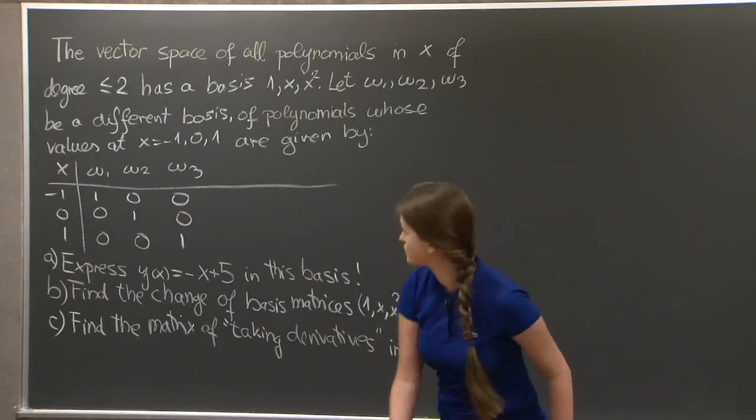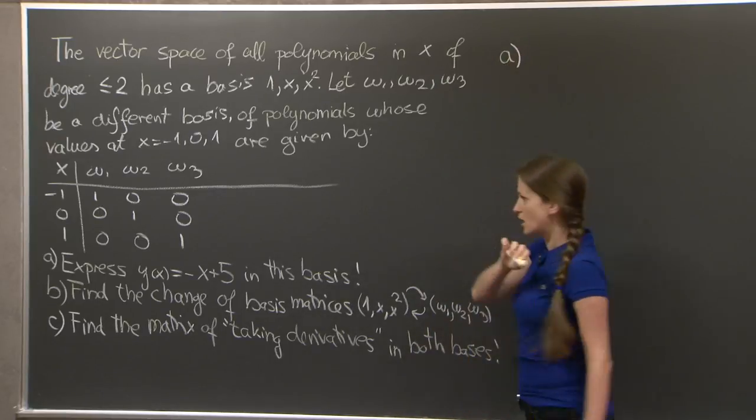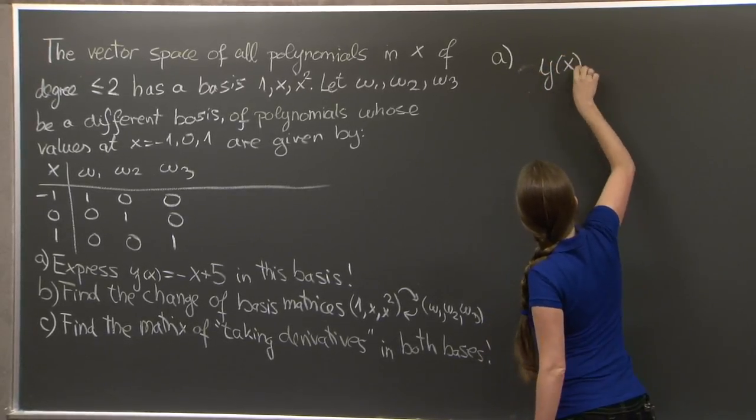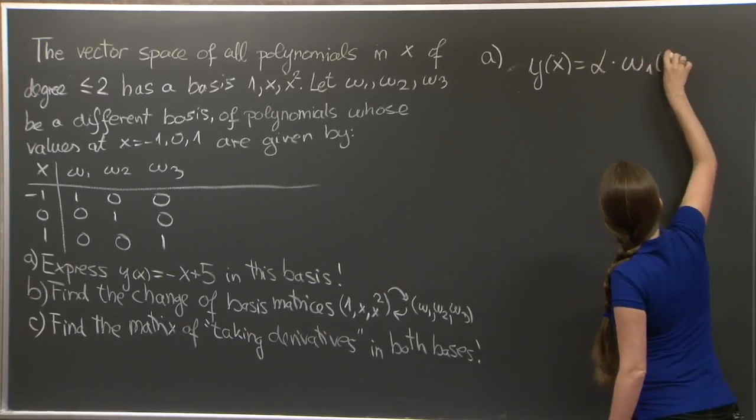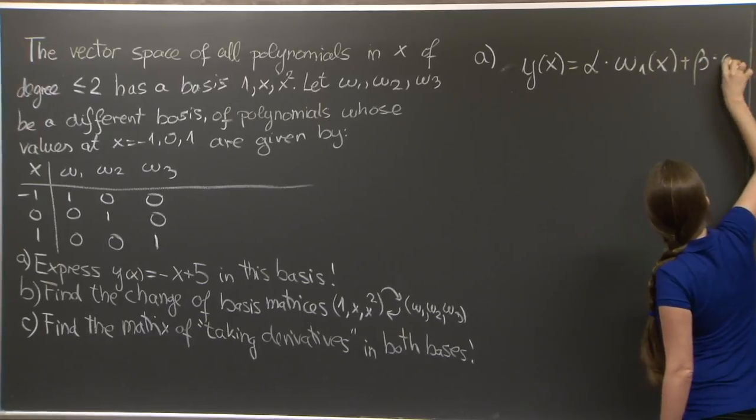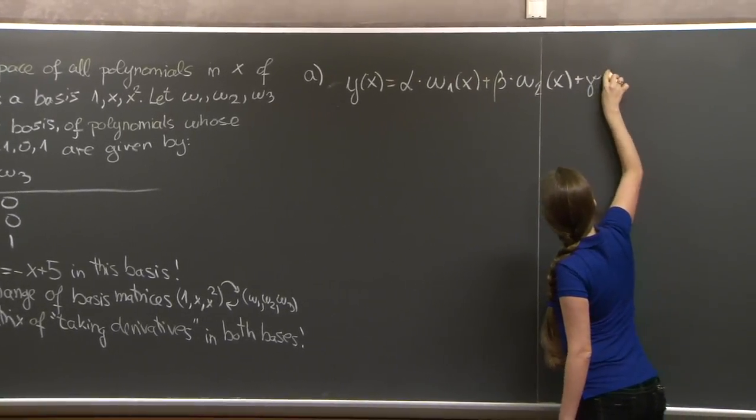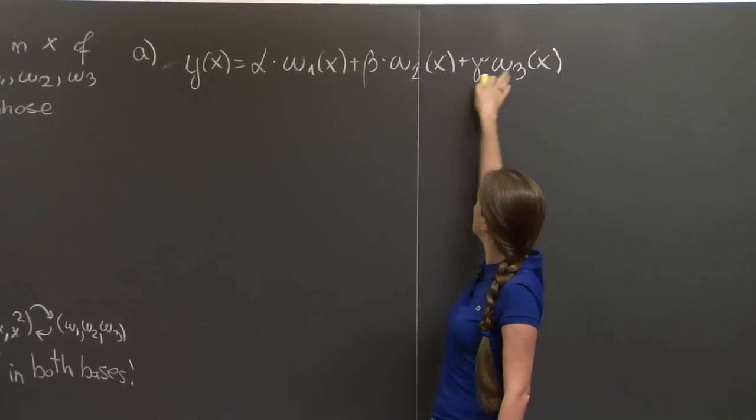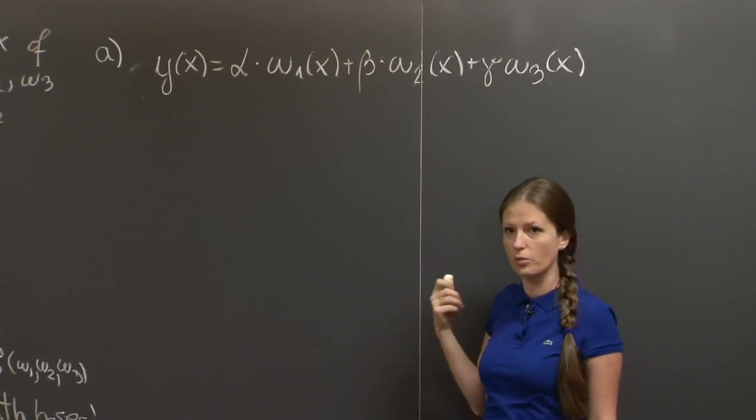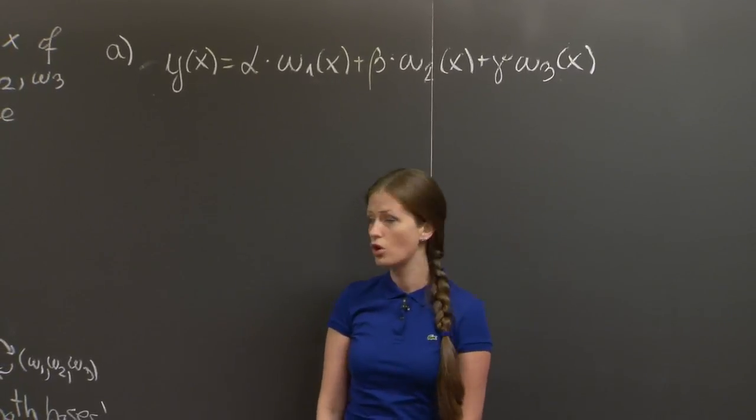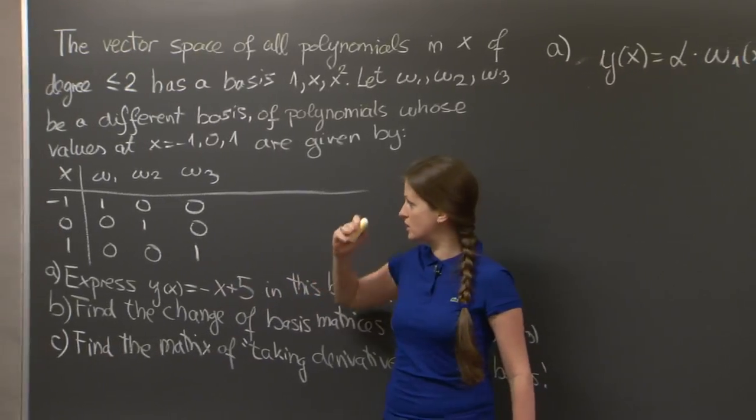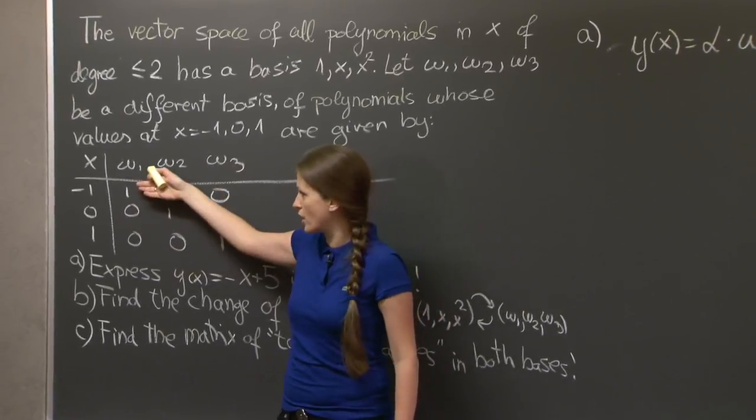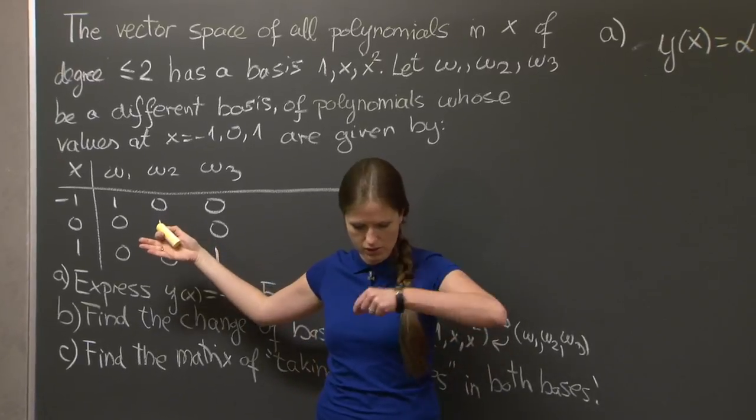Hi. Welcome back. So to start with problem A, we need to find coefficients alpha, beta, and gamma so that y(x) is expressed in this new basis w1, w2, and w3. Now, one way to do that would be to look at this table of values, explicitly find w1, w2, and w3.